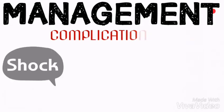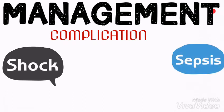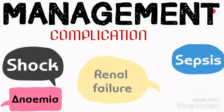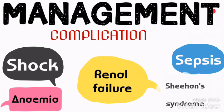Complications of PPH include shock due to severe hemorrhage or blood loss. Sepsis due to excessive manipulation in retained placenta. Anemia due to blood loss, specifically loss of red blood cells via hemorrhage. Renal failure due to blockage or reduced blood supply to the kidney. And Sheehan syndrome — pituitary necrosis due to reduced blood supply to the pituitary gland.